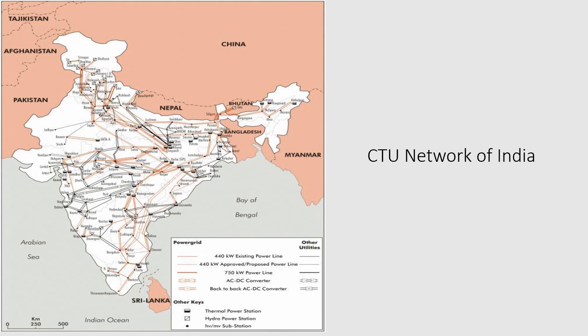If your plant is larger — 500 megawatts and above — requiring connection at the CTU level, this is the CTU network of India. The small black points are thermal power plants connected to the inter-regional transmission system. If you are a solar or wind developer putting up a 500 megawatt project, you apply to Power Grid. They assess whether injection capability exists in the current system or if additional infrastructure needs to be built. More details on how GNA grants connectivity when existing infrastructure is not available will be covered in the next part.